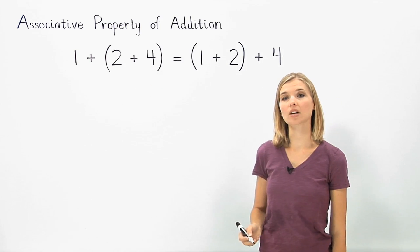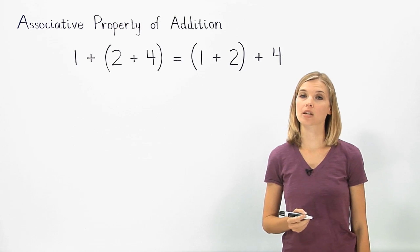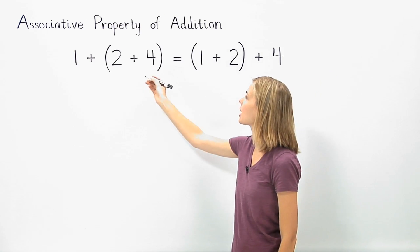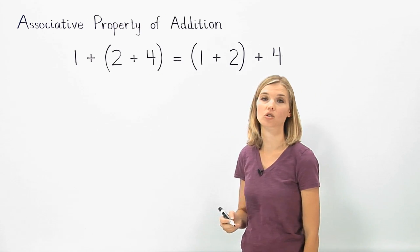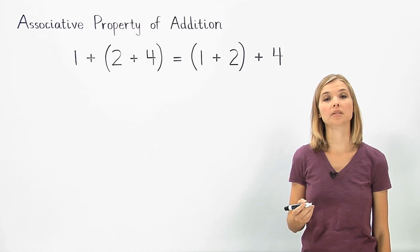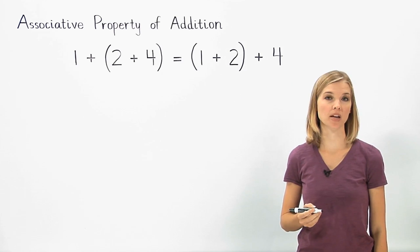The associative property of addition states that when we add more than two numbers, the grouping of the addends does not change the sum. So let's look at how this problem demonstrates the associative property of addition.